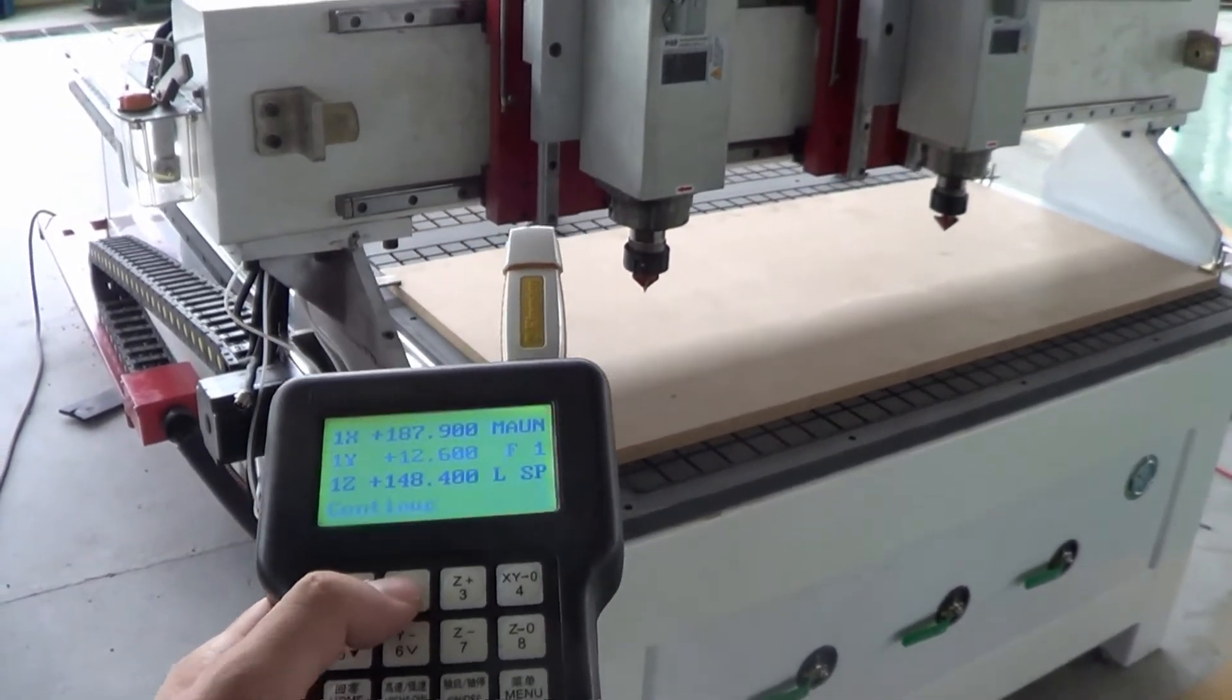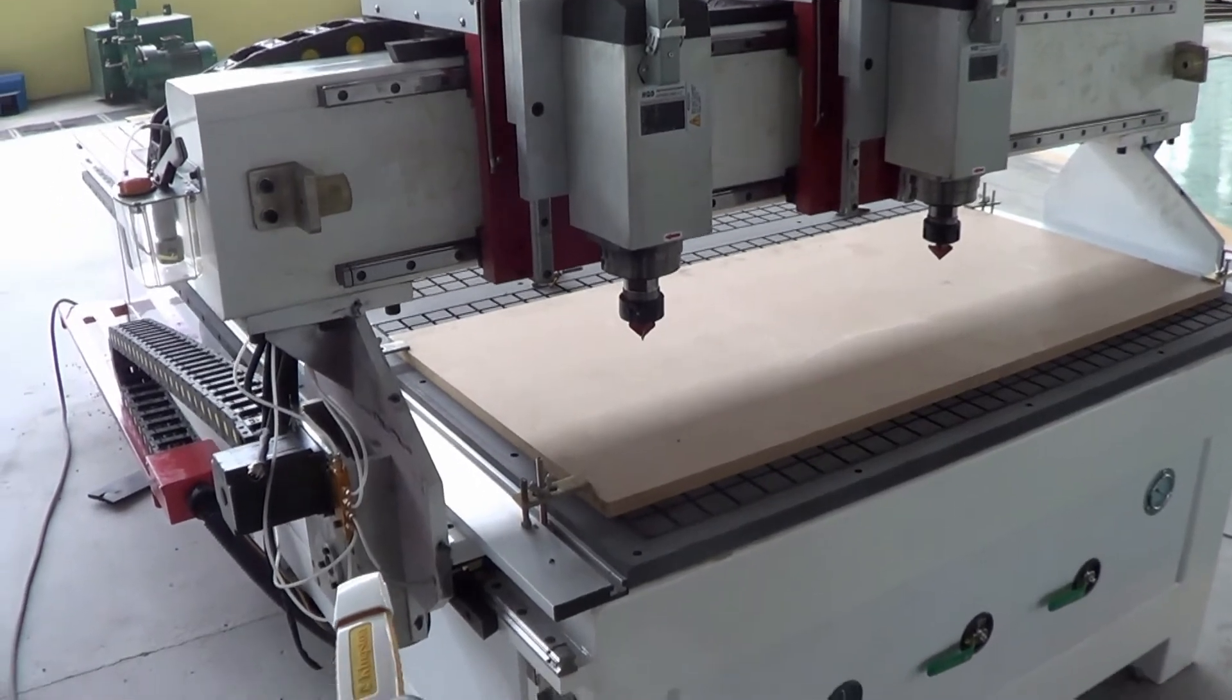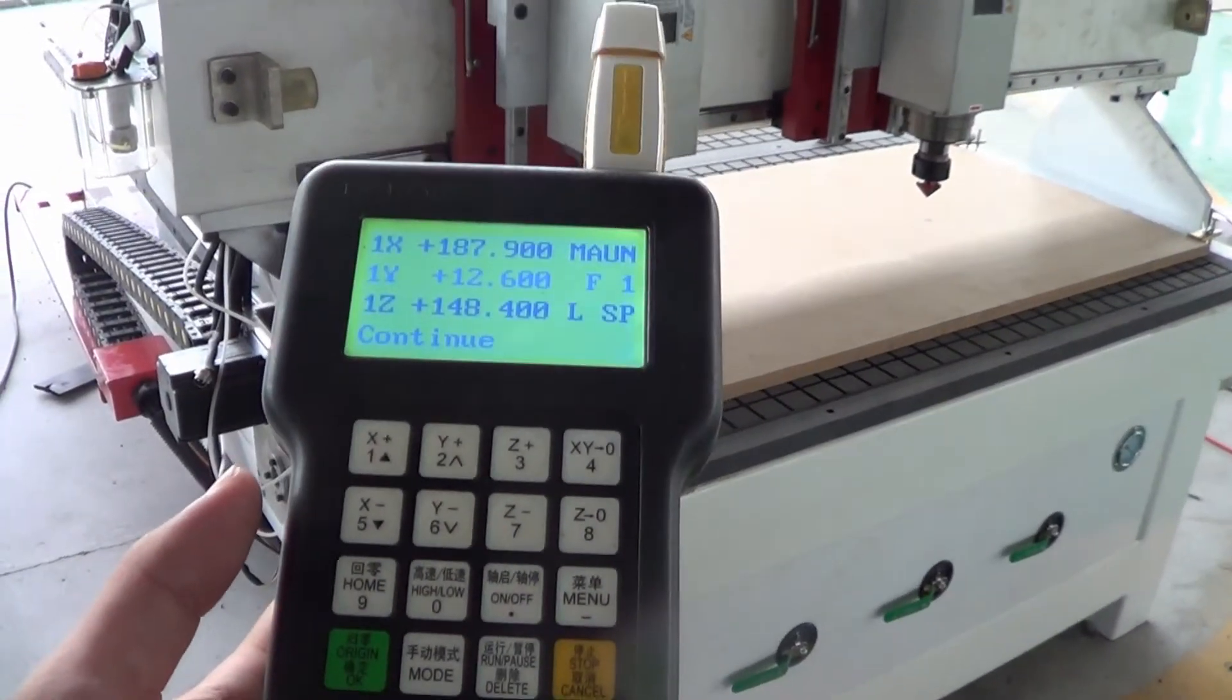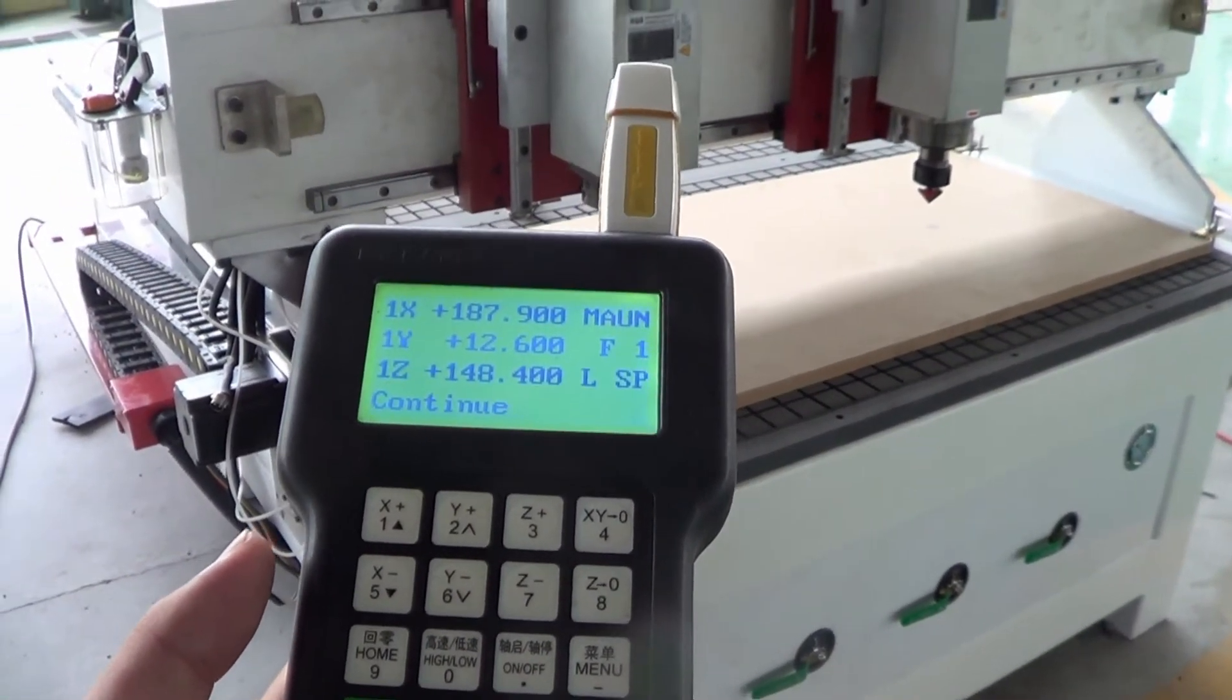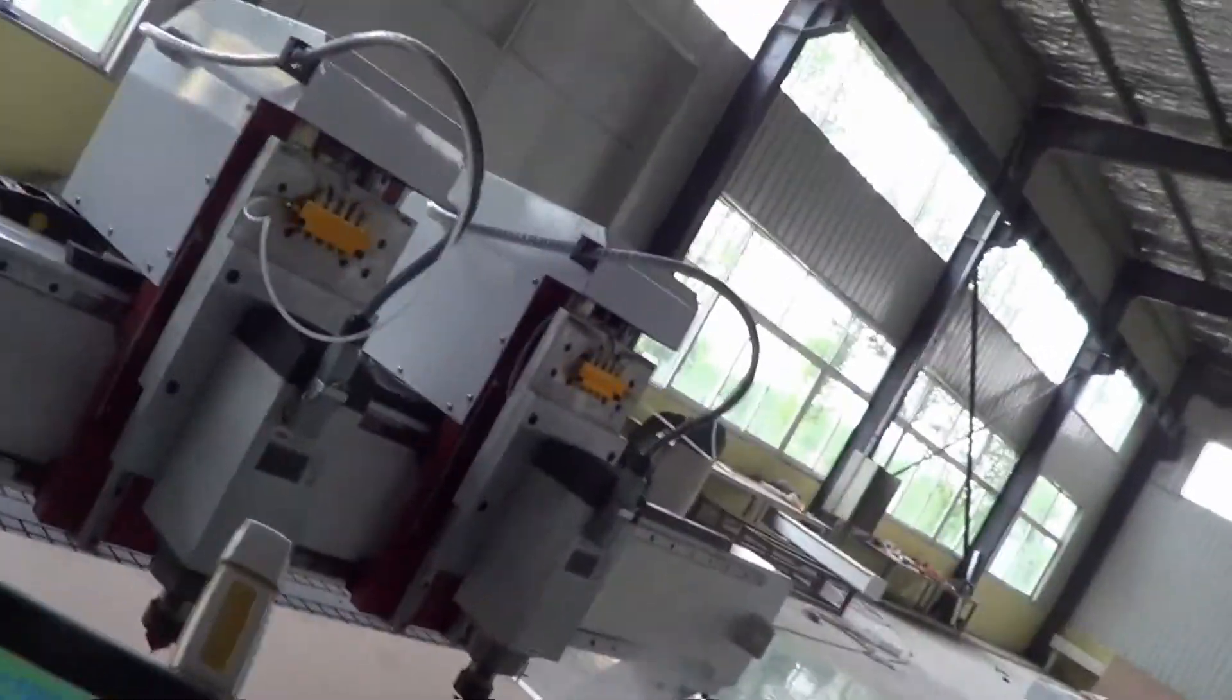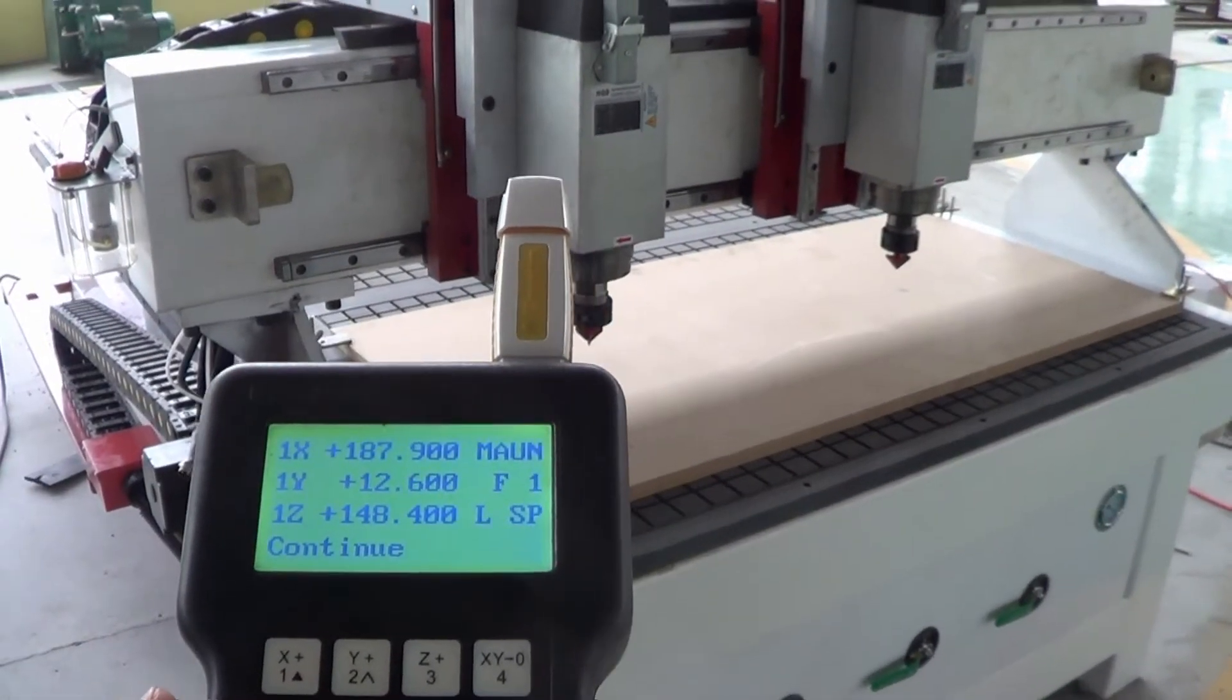Now the two spindles are at the same Z-height level, and now we can find the start point, also called the origin point, to start our work.